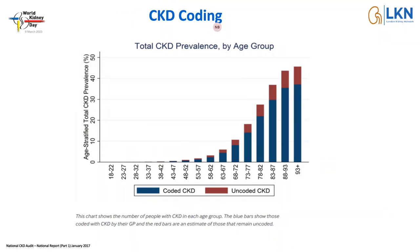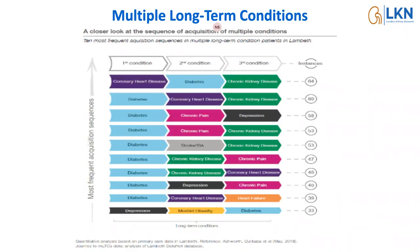Moving on to coding — as with CKD identification not happening, there are huge issues around coding. Looking at data from the CKD audit, there are significant numbers of people who are not just undiagnosed but also uncoded with CKD. CKD prevalence goes up with age, and uncoded CKD does the same, with quite large proportions remaining uncoded. A study from Guy's and Tommy's Charity looked at multiple long-term conditions and acquisition sequences.